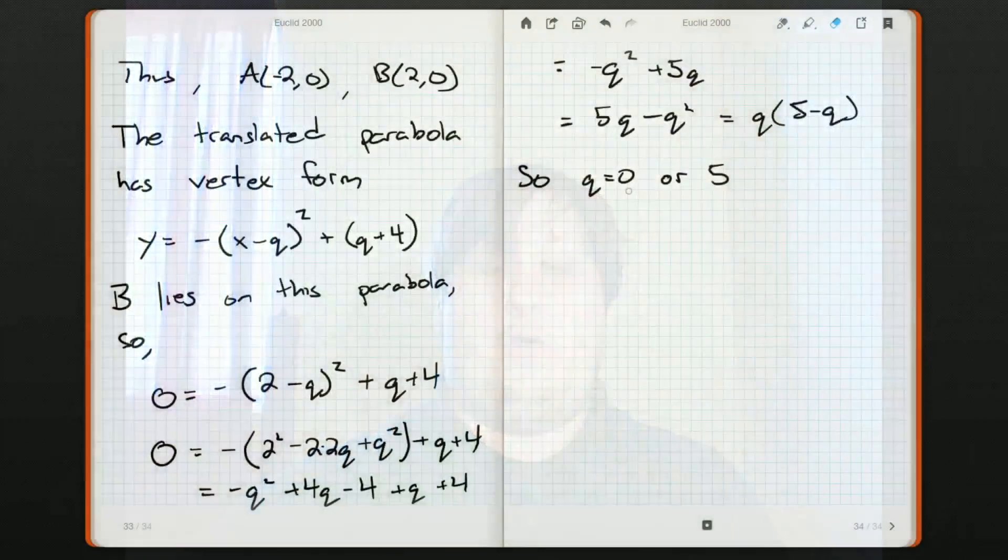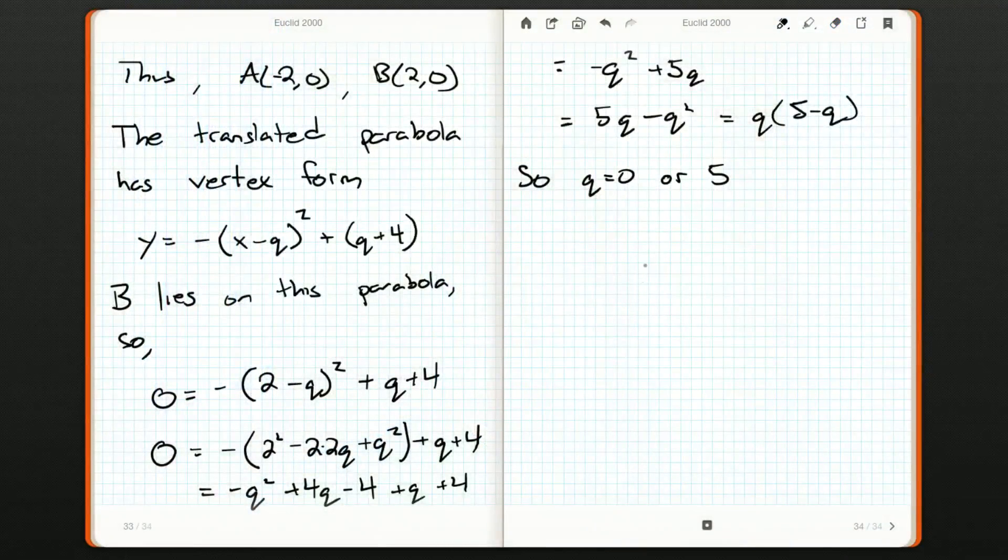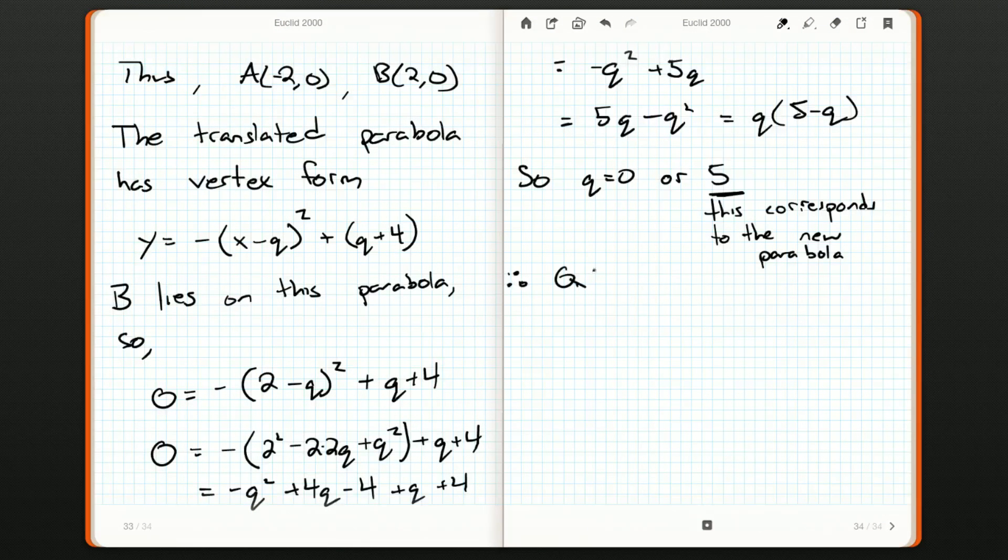And that means that capital Q, that point, will have coordinates (5, 5 + 4), so (5, 9). So, this corresponds to the new parabola. And therefore, Q is at (5, 9). And that means the vertex form of the translated parabola is y = -(x - 5)² + 9.